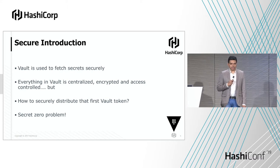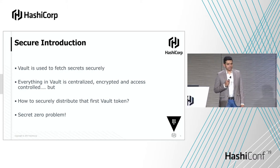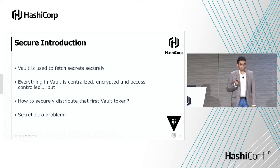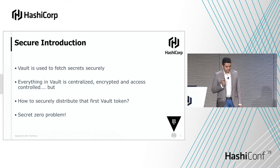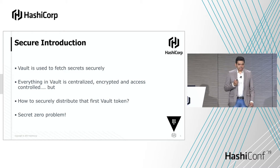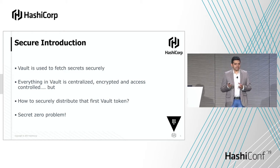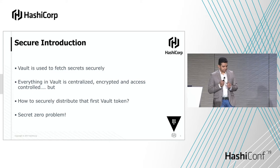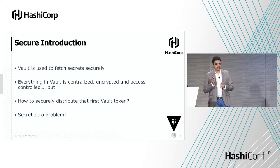Let's dive into what secure introduction is. We all know Vault is good at keeping secrets — it stores everything encrypted and issues secrets only to those who have access. But the main catch is that everybody needs a Vault token in order to get anything done from Vault. Everything is centralized, but everything needs a token. Secure introduction is essentially a problem space wherein all applications and services somehow need to get hold of this first Vault token.